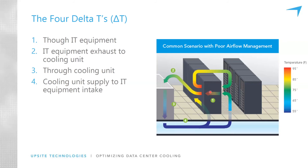Delta T4 — why does air heat up so much from the time it leaves the cooling units before reaching the IT equipment intakes? The cause is exhaust air recirculation: hot exhaust air finds its way into the cold aisle flow path approaching the IT equipment, mixing with and warming up the conditioned air. The way to reduce delta T4 is through airflow management improvements: sealing all cable openings, sealing all cabinet spaces, and ensuring aisle containment doors on the ends of rows, something over the top of the cabinets, or containing the hot air so it can't get back into the cold aisle. Eliminating exhaust recirculation is the only way to reduce delta T4.